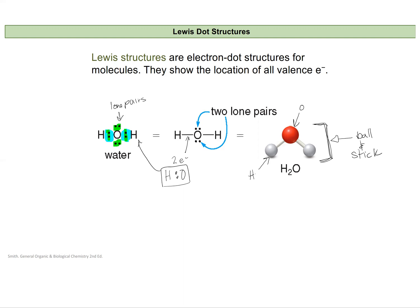We're now going to walk through how we construct these Lewis dot structures to have a better idea of how atoms are arranging themselves through covalent bonds to form different types of molecules.